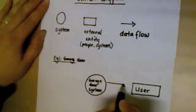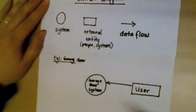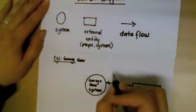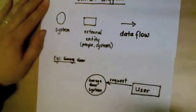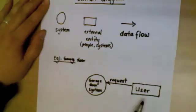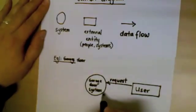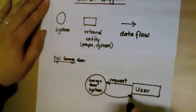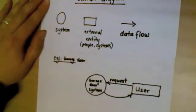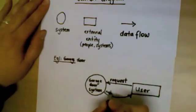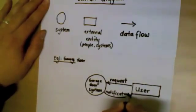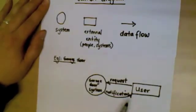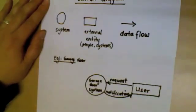Now we need to work out what data is sent from the user to the garage door system. We'll call it a request — that might be a request to open the door or to shut the door. And does the system ever send any message back to the user? In some cases the user might see the door opening, or alternatively we might get a flash on our remote. Let's say a notification is sent back to indicate that something has happened. Everywhere I put a data flow, I've written the data being transferred on that arrow — and that's a context diagram.